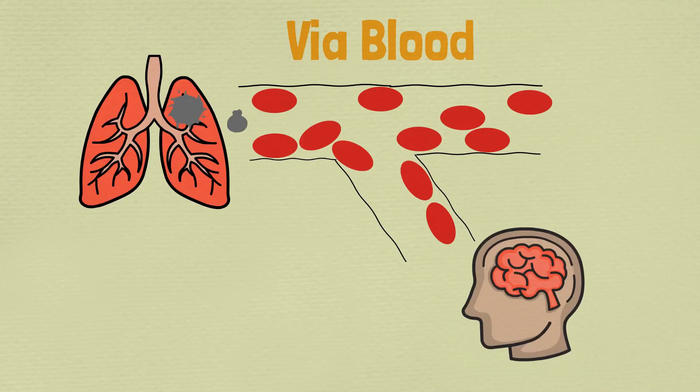Cancer cells detach from the tumour and start flowing along the bloodstream. These cells settle down at the next place where blood flow slows down and start growing.